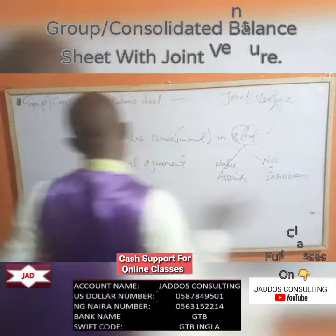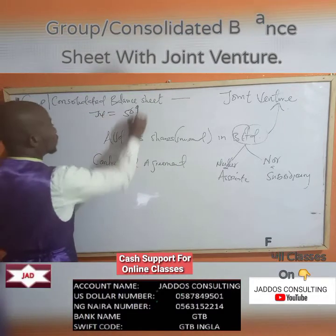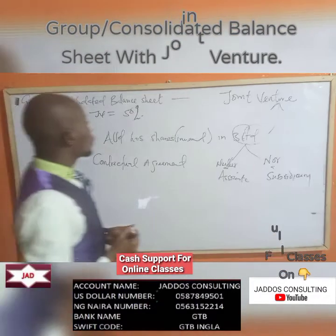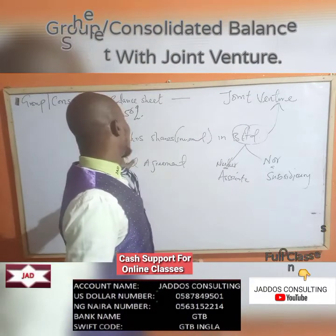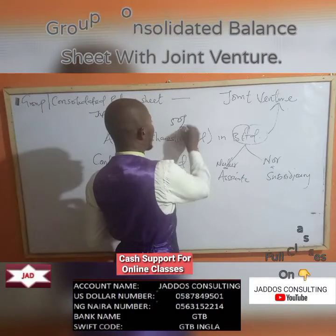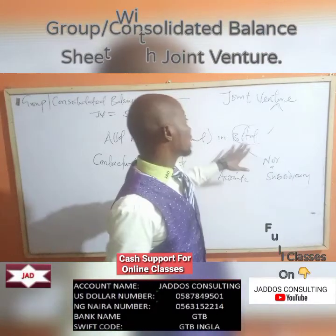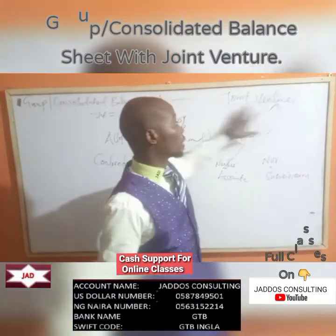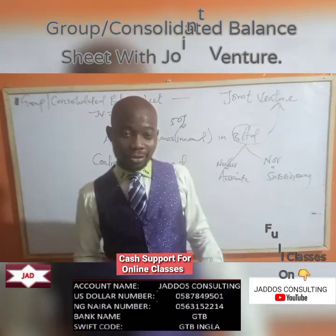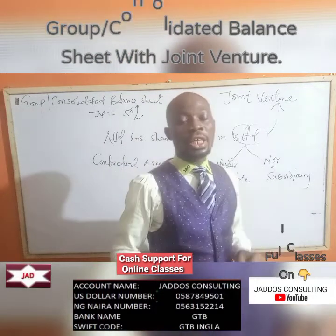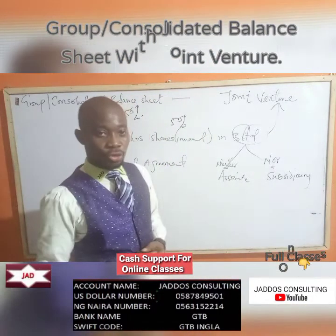Generally, a joint venture relationship is a 50% acquisition. Where you have A Limited having 50% shares in B Limited, B Limited can be seen as a joint venture — except you are able to establish other values. There should be a contractual agreement establishing the fact that it is a joint venture relationship.